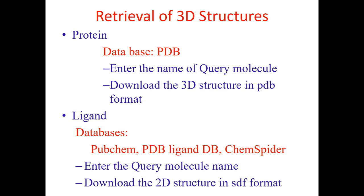For molecular docking, we must have the necessary structure to dock with each other. We must retrieve the 3D structure of both protein and ligand. To get the protein 3D structure, the PDB database can be used to download the 3D structure of the receptor. For the ligand, there are a large number of databases available. The best source to get ligand structure is PubChem, which is maintained at NCBI, as well as PDB Ligand Database and ChemSpider.